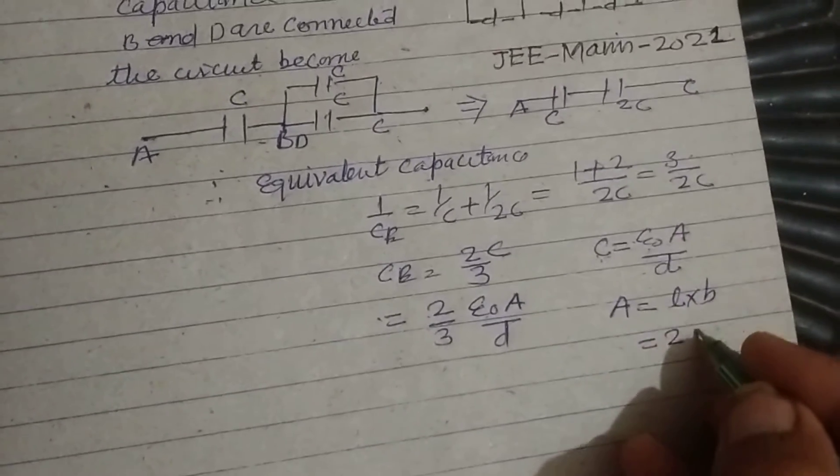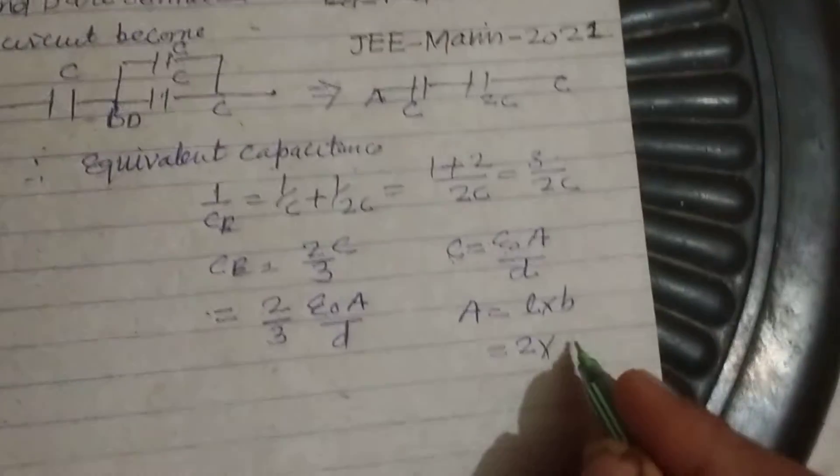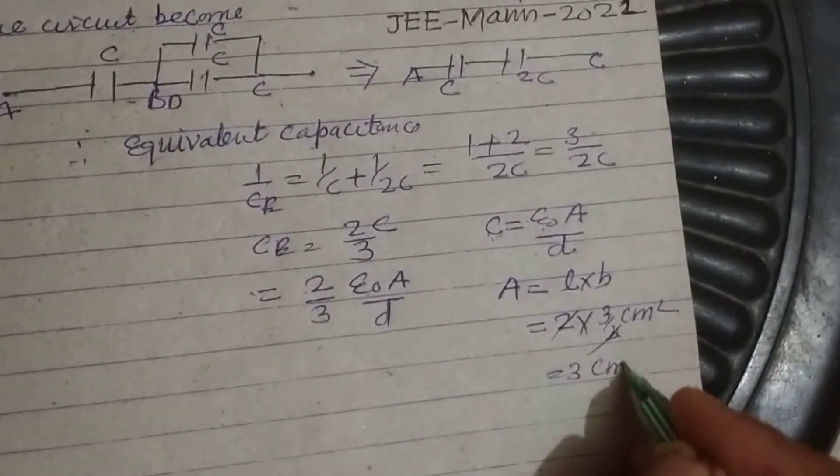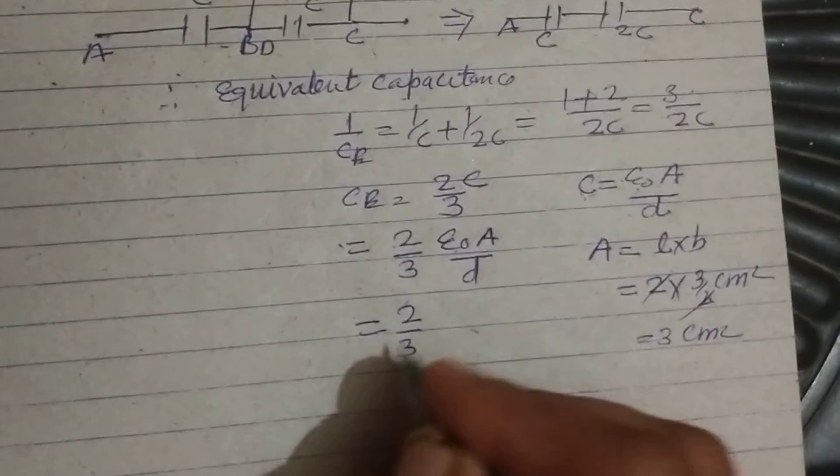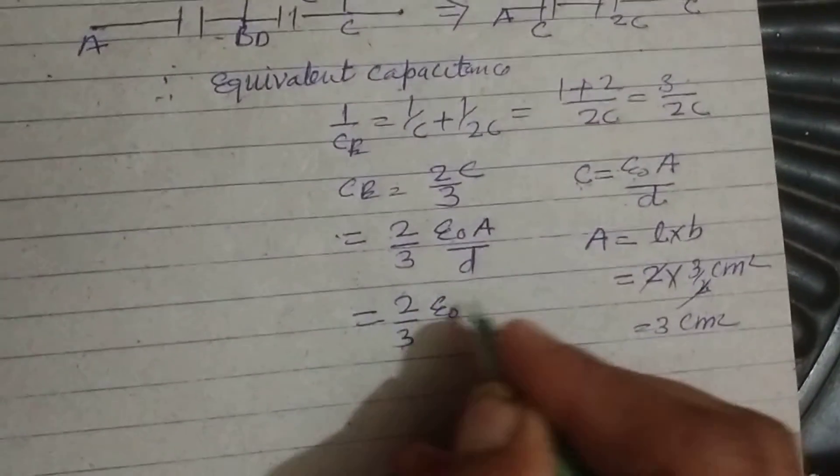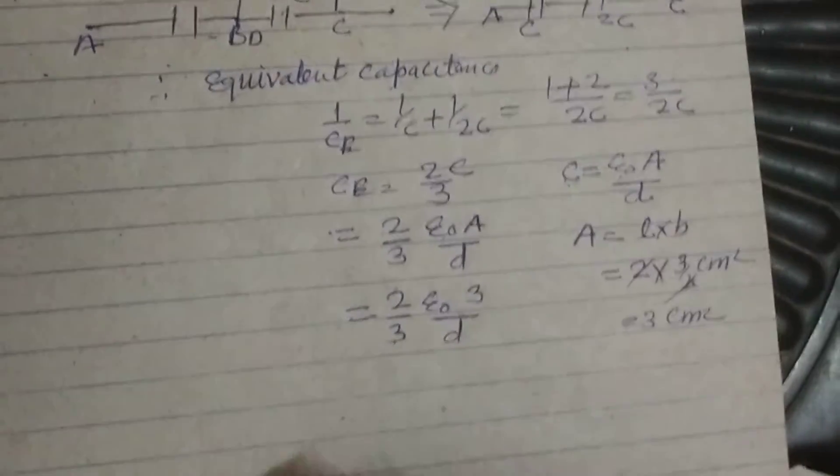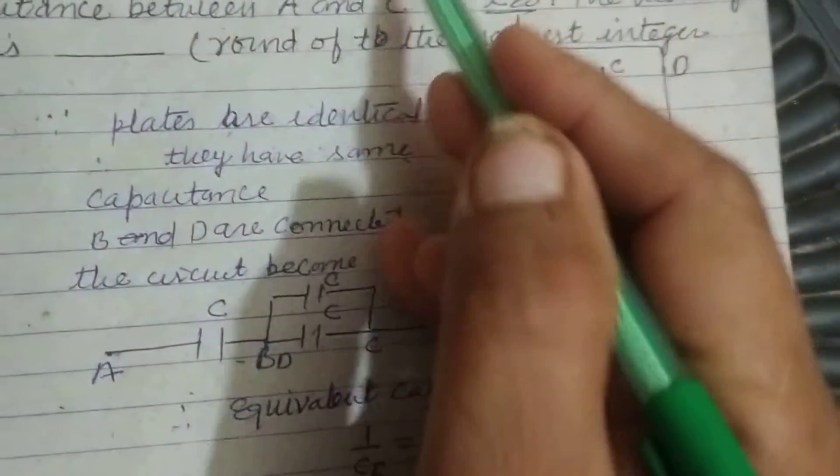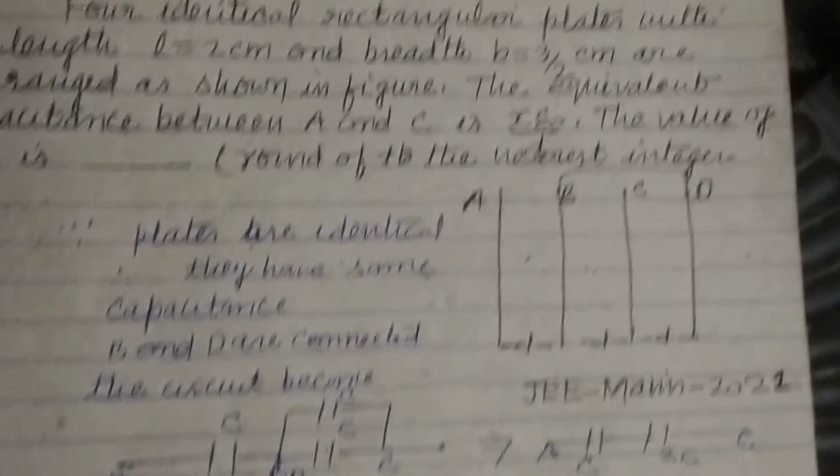Length is 2 cm as given in question and breadth is given 3 by 2. So 3 by 2 cm square or 3 cm square. So 2 by 3 epsilon not A, A is 3 upon d. And it is given to us in the question which is x epsilon not A upon d.